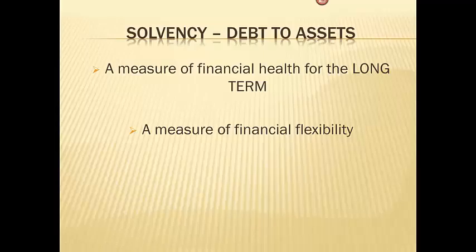Hello, this is Julie Bonner. Today we're going to talk about a solvency ratio called debt to assets. This is a measure of financial health for the long term, meaning that for the foreseeable future, the company will be able to operate, generate profit, be able to pay its bills, all that sort of thing. This is a measure of financial flexibility, and we'll talk about what that means here in just a moment.